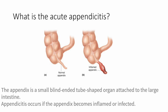The appendix in its normal structure is a small, finger-like organ attached to the large intestine, which is called the cecum. Appendicitis occurs when the appendix becomes inflamed or infected.